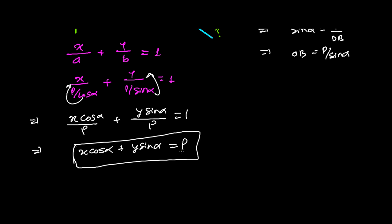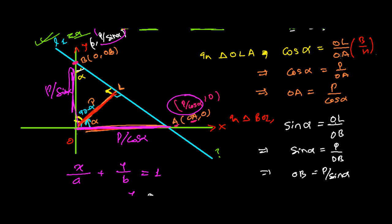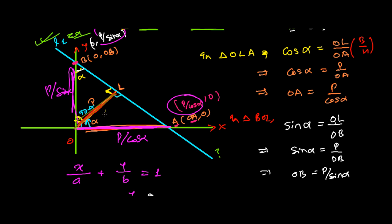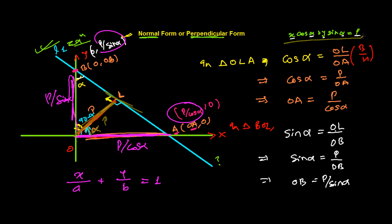Here, P is the length of the perpendicular from the origin to the line, and alpha is the angle made by that perpendicular. In the figure, this was the length of the perpendicular and alpha was the angle it makes. The equation of line L1 is x cos α + y sin α = P, where the perpendicular makes angle alpha with the positive x-axis, measured anticlockwise.